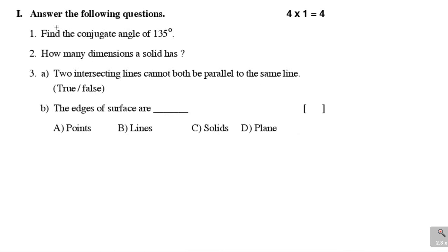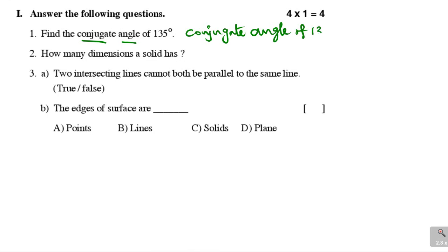Let us see the first section. Answer the following questions. First problem: find the conjugate angle of 135 degrees. Conjugate angles means if the sum of two angles equals 360 degrees, then those two are called conjugate angles. So the conjugate angle of 135 equals 360 degrees minus 135 degrees. If we subtract 135 from 360, we will get 225 degrees. So this is the answer for the first question.